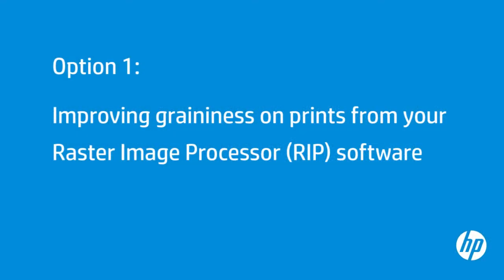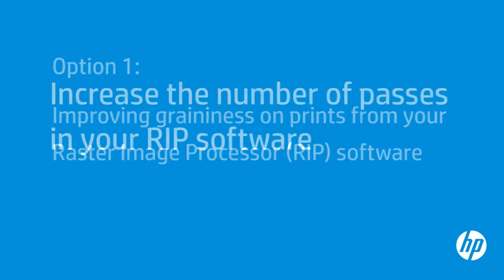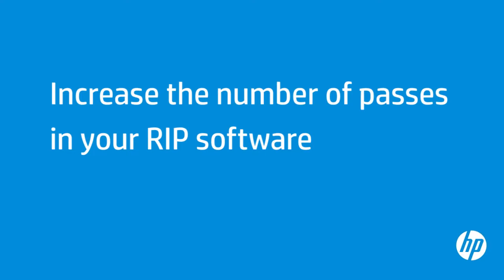Adjusting the media profile in your RIP software can help resolve graininess issues. For this demonstration, we will use Onyx Production House X10 software. Increasing the number of passes will tend to improve print quality because it allows more time to dry. For example, you will probably see less grain with ten or more passes.